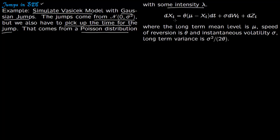So this is our standard Vasicek model. dx is theta times mu minus x_t dt plus sigma dW_t. So this is our drift and the sigma is our diffusion. To that we are adding this Gaussian jump.